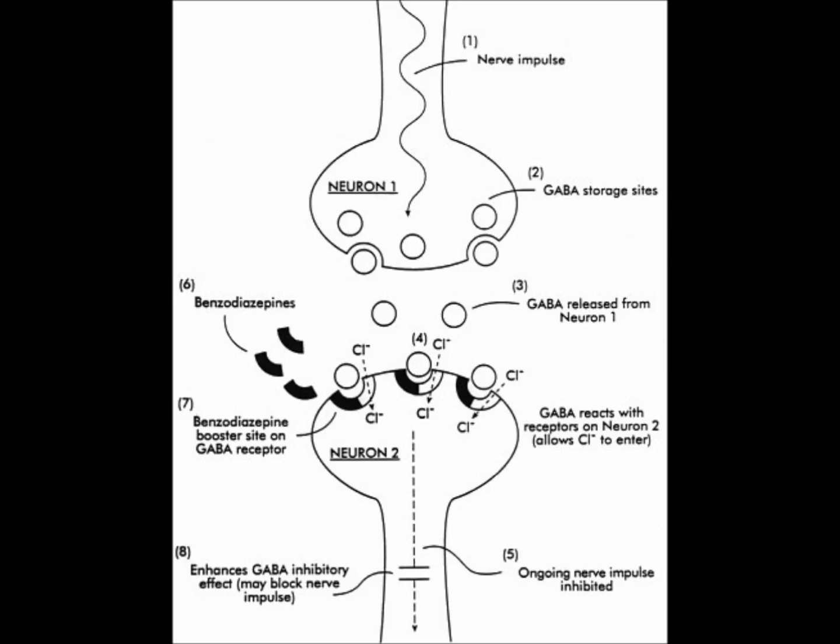The basic science behind benzodiazepines is that they enhance the action of a neurotransmitter known as GABA. GABA is our body's main calming mechanism, and benzodiazepines also sort of turn off or interfere with signals that would create an excitatory or stress response. The diagram Professor Ashton provides shows how GABA travels across the synapse between two neurons and attaches to a GABA receptor, and that we also have benzodiazepine receptors on these neurons.